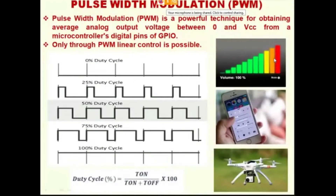So varying the voltage can vary the volume, brightness, and speed. That is the only thing which we need to understand.